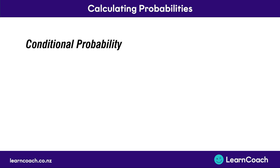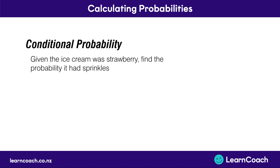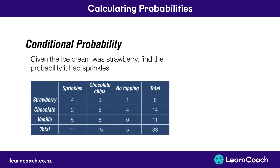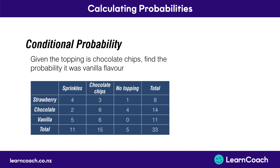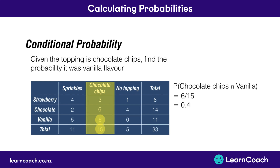Now if we look at another example: given the ice cream was strawberry, find the probability it had sprinkles. If this is our table, we're looking at the strawberry total and the sprinkles within the strawberry category. So the probability of sprinkles given it was strawberry is 4 divided by 8, which is 0.5. For the next question: given the topping is chocolate chips, find the probability it was vanilla flavour. Looking at the chocolate chips category and how many of those are vanilla, we divide 6 by 15, which gives us 0.4.